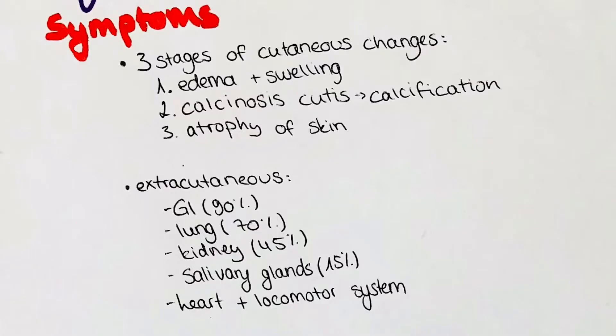The disease presents with different organ-specific symptoms. The skin lesions progress in three stages. The first stage presents with swelling and edema of the skin. The second stage presents with calcinosis cutis — the calcification of the skin and joints, where those become hard and calcified. The last stage is the atrophy of the skin.